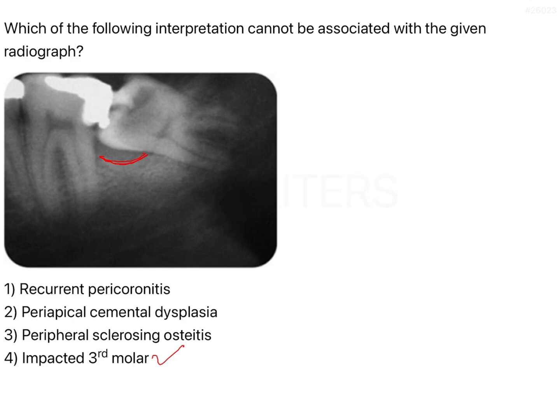The soft tissue growing on top of the tooth is called the pericoroneal flap, and the entire situation is called pericoronitis. In recurrent pericoronitis, food impaction occurs between the second and third molar, making it difficult to clean. Microorganisms get lodged, start fermenting, and eventually cause pericoronitis, which leads to periodontitis and bone loss in that region.